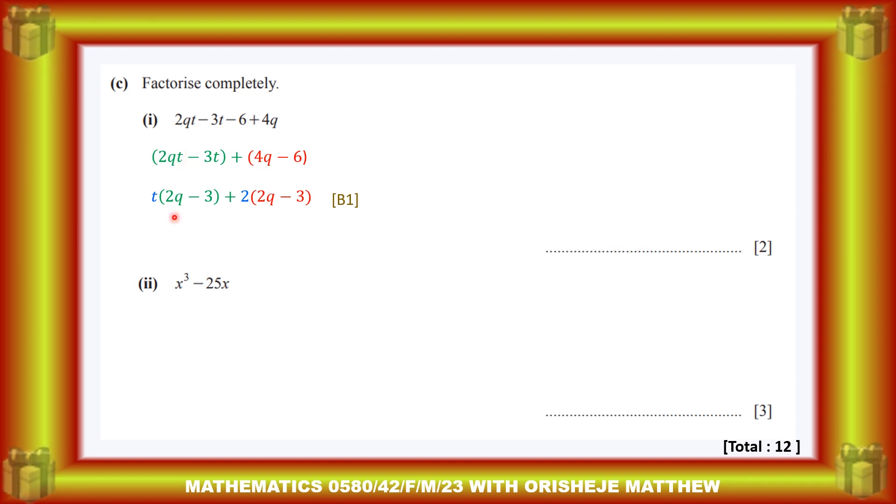Then if you look at the red part of the expression, 2 is a factor of 4 and 2 is a factor of 6, so bring out 2. That will become 2(2q - 3). So with that factorization, we can group it together. That will become (2qt - 3), because we have q common to both sides, which is the common bracket.